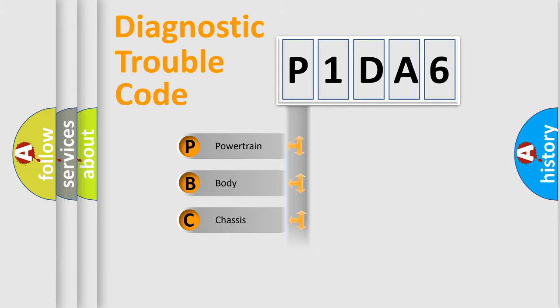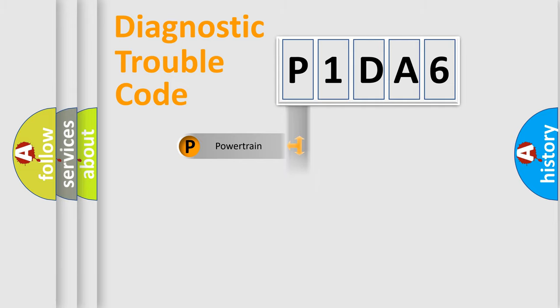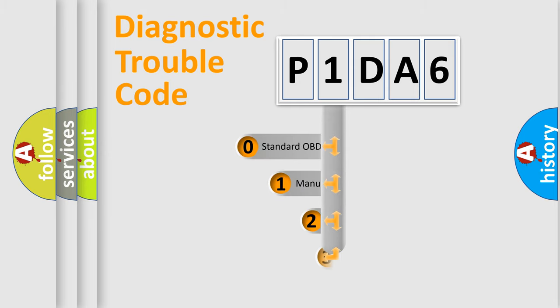The four units are: Powertrain, Body, Chassis, and Network. This distribution is defined in the first character of the code.